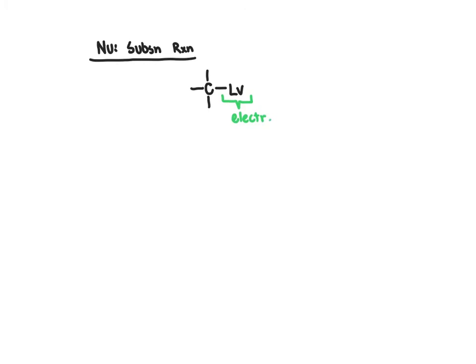This electronegative atom is what we refer to as the leaving group, because it's what's going to break away during the course of the reaction. Due to the fact that we have an electronegative atom directly bonded to that carbon, that carbon is going to be very positively polar. I'm putting delta plus there to indicate a polarized covalent bond where the carbon is positively polarized and the leaving group is negatively polarized.